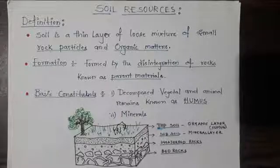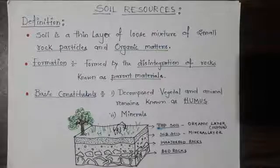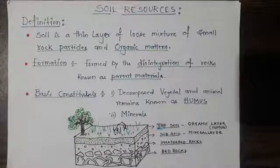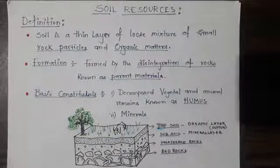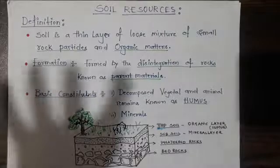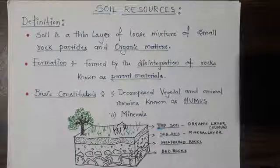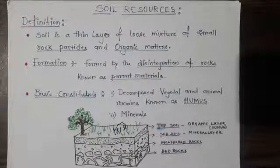Soil also has organic matter known as humus. This humus is derived from the decomposed matter of dead plants and animals. Once the plants and animals die, nitrogen-fixing bacteria called nitrobacter, or decomposing bacteria, decompose the dead organisms and break them down into soil nutrients. So soil is the mixture of both organic and inorganic nutrients.